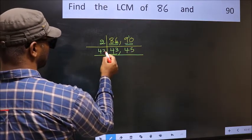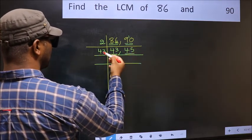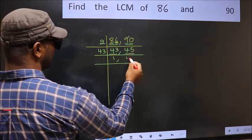Now here we have 43. 43 is a prime number, so 43 times 1 is 43. The other number 45 is not divisible by 43, so you write it down as it is.